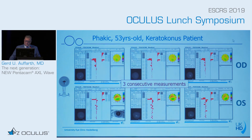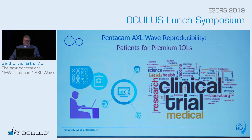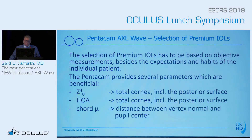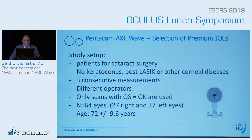This leads us to the second clinical trial, where we looked at premium IOL patients — specifically what is beneficial in the Pentacam-RXL wave that we could use to identify or exclude candidates, or understand why some patients do not do as well. Parameters we examined include spherical aberration, high-order aberrations, the corneal topography, and the distance between the vertex normal and the pupil center — Kappa Mu. We excluded keratoconus, post-LASIK, and other corneal disease patients. The same setup was used: three consecutive high-quality measurements.